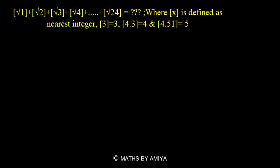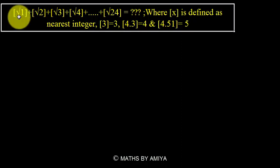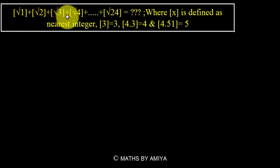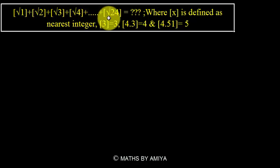Hello friends, what's up? Welcome back in the world of Maths by MEI. In this learning concept video, we will try to learn the best way possible to solve a question. The question is: bracket of root 1 plus bracket of root 2 plus bracket of root 3 plus bracket of root 4, continuing till bracket of root 24 — what is this equal to?